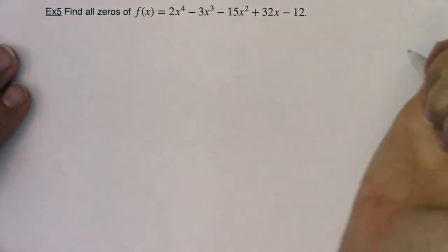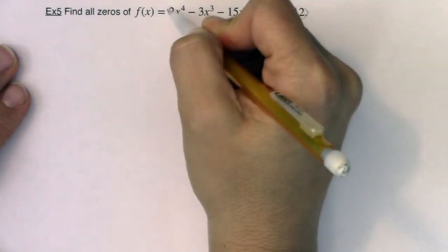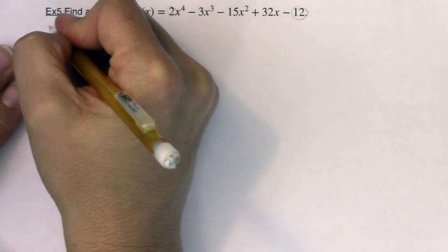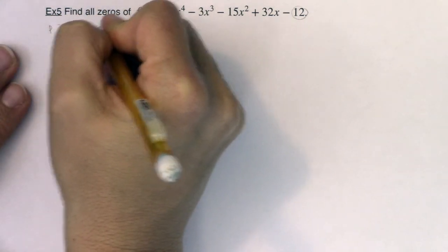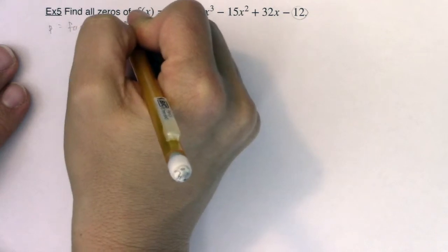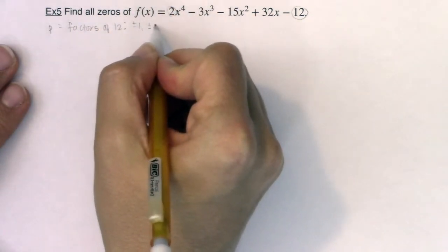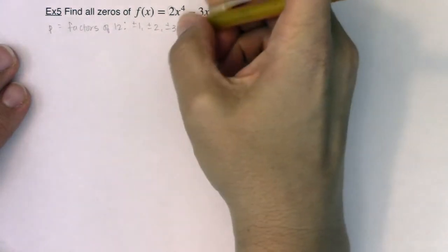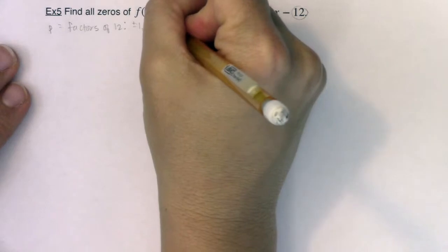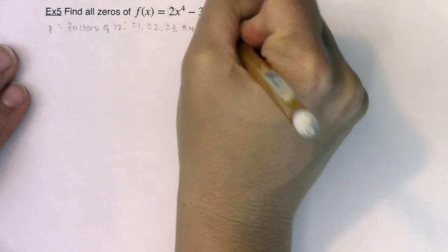If we were going to make a list of all possible rational zeros, we want to look at our constant and then our lead coefficient. So P is always the factors of that constant, in this case the factors of 12, which would give me plus or minus 1, 2, 3, 4, 6, and 12. There's a lot of them.